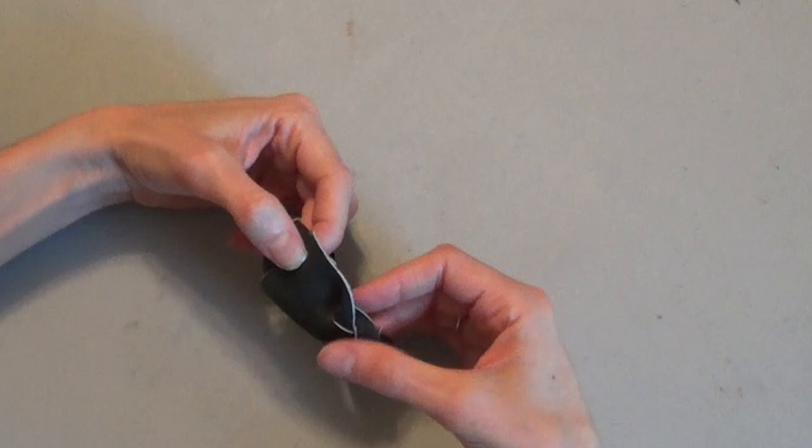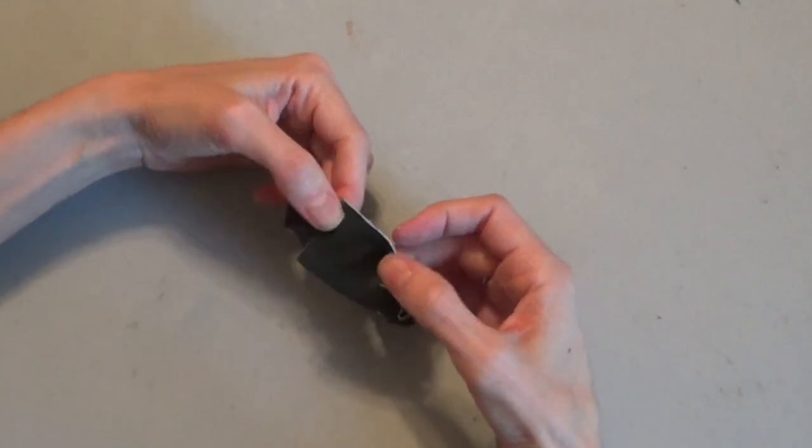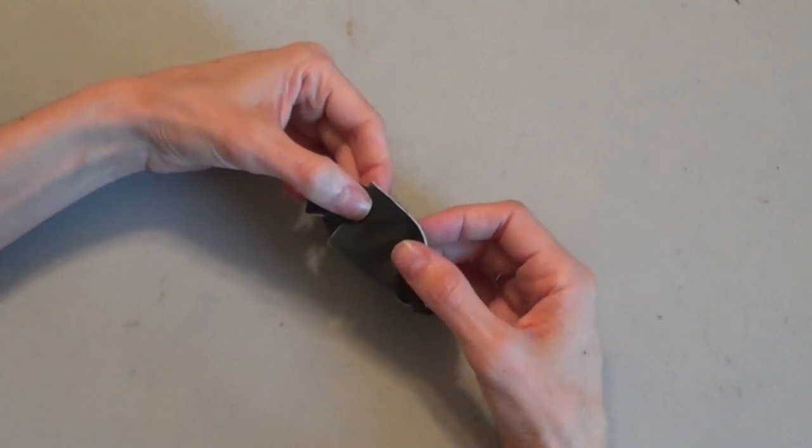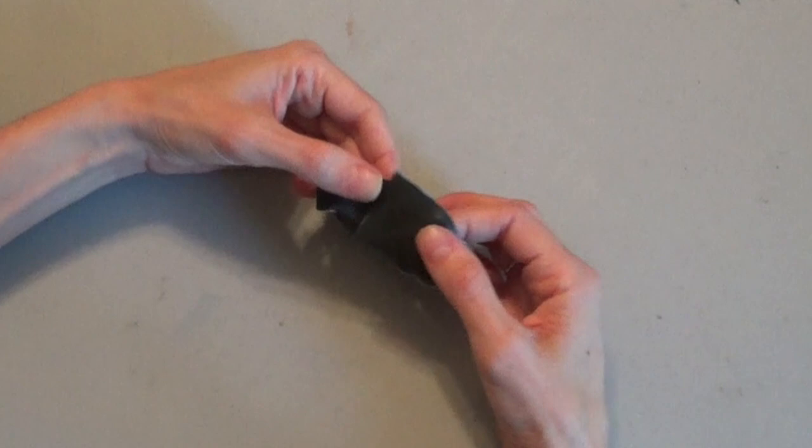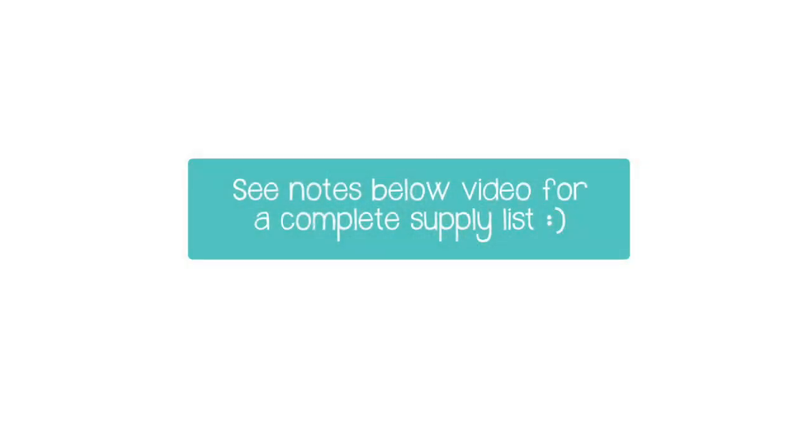I just want to point out that this particular leather is pretty thin. If you're working with a thicker, stiffer leather, you might want to look at some other options for setting the snaps. I'll have some of those ideas listed below the video on YouTube as well as on the blog at JewelryTutorialHQ.com.